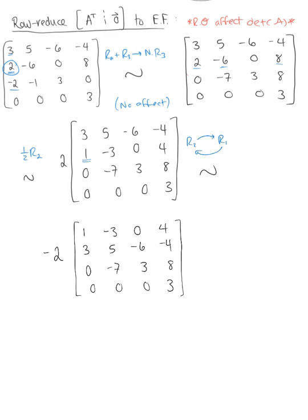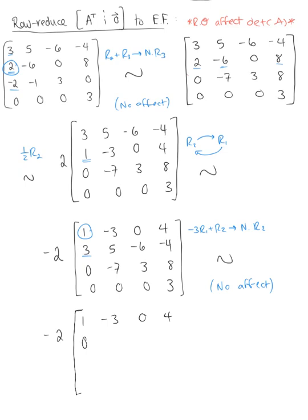Our first pivot position is now 1, making it easier to eliminate the entry below it. We do negative 3 times row 1 plus row 2 to get the new row 2 — combining has no effect on the determinant. We are left with negative 2 times the matrix: row 1 is 1, negative 3, 0, 4; row 2 becomes 0, 14, negative 6, negative 16; row 3 is 0, negative 7, 3, 8; row 4 is 0, 0, 0, 3.